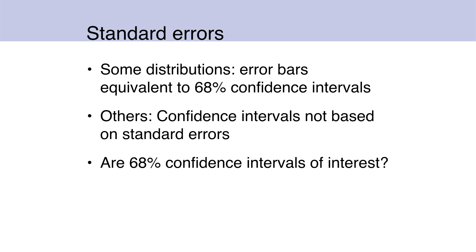For some distributions, the error bars are equivalent to a 68% confidence interval. For example, the normal distribution going plus or minus one standard deviation is 68%.